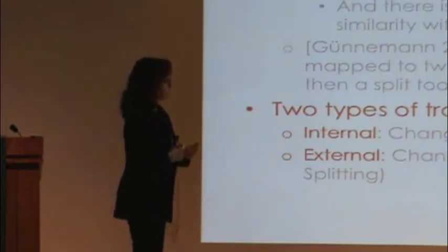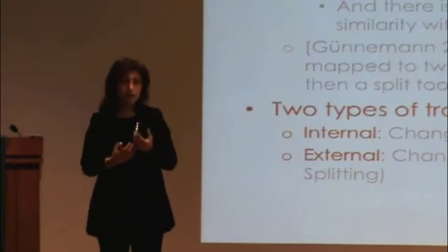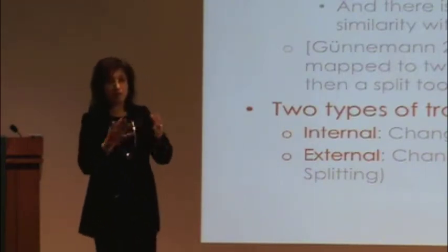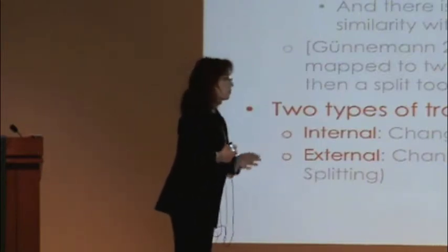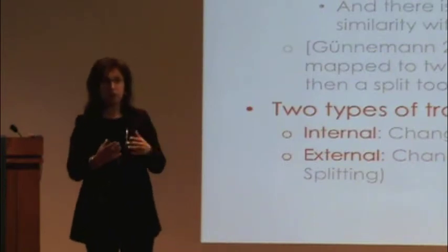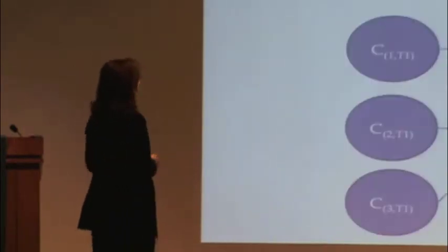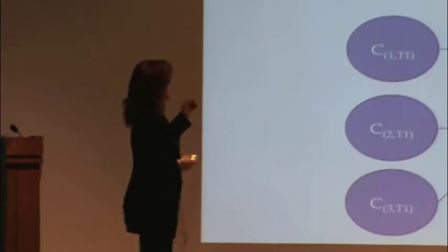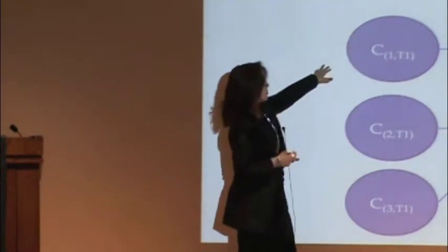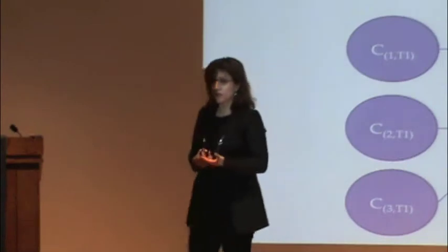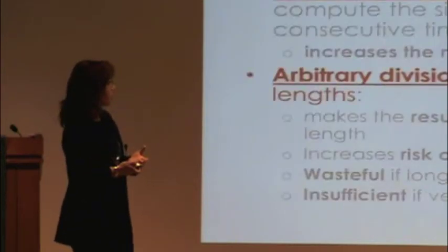There are two types of transitions. Internal transitions are changes in internal cluster metrics attached to the cluster — for example, the size or cardinality. External transitions refer to interactions between clusters — for example, two clusters merging or one cluster splitting into two in the next period. Here is an example: at period T1, T2, and T3, one cluster simply survived while two clusters merged. The goal is to infer this on the fly, continuously, and without having to use the raw data.